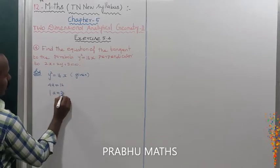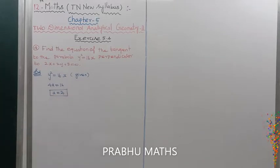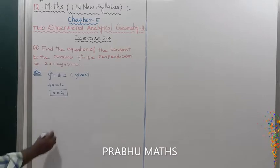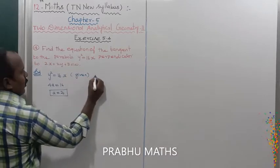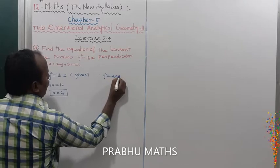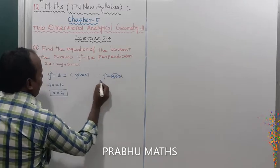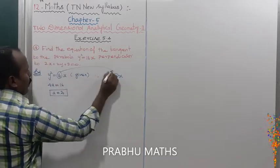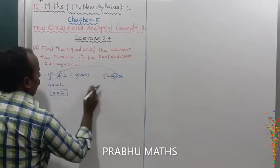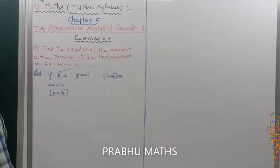So a is equal to 4. That is the a value. The coefficient of x is compared to 4a = 16, giving a = 4.